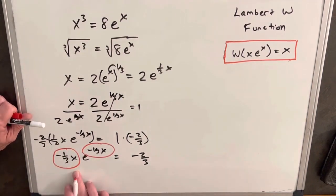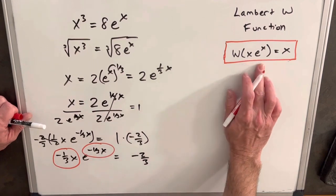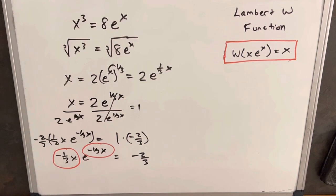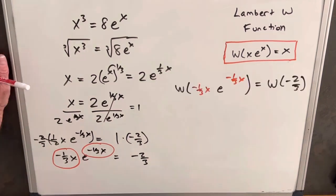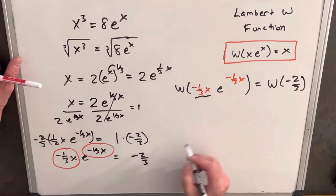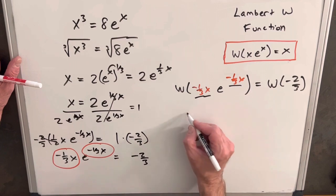We're in exactly this format. You could do a u-substitution and imagine a u here, then output that same u. So let's apply the Lambert W function on both sides. Reducing the left side, we just output this piece which is the same.